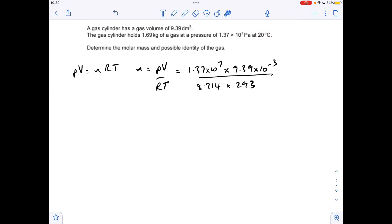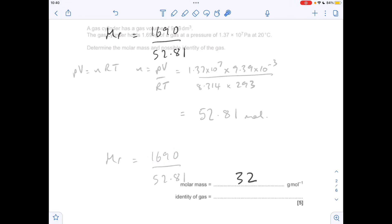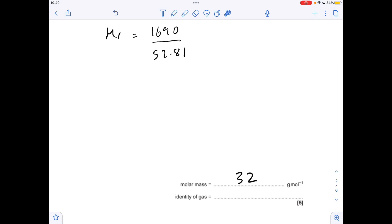Divided by the gas constant, multiplied by the temperature which has to be in Kelvin, but they've given us it in degrees C, so we're just adding 273 to that. So that's coming out at 52.81 moles. Remember the Mr is going to be mass over the moles, and just be careful with the mass because it's in kilograms—we have to have it in grams, so just multiply by a thousand. Molar mass comes out at 32, so the gas is likely to be oxygen, O₂.